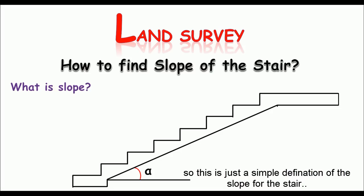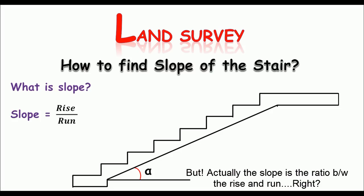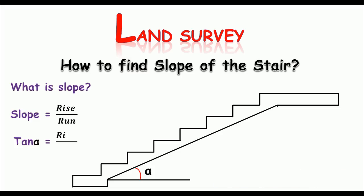But actually, the slope is the ratio between the rise and run, or you can say the slope is just the tangent of alpha, because tangent of alpha is a trigonometric ratio which is just rise over run. So this is just the simple definition of slope.